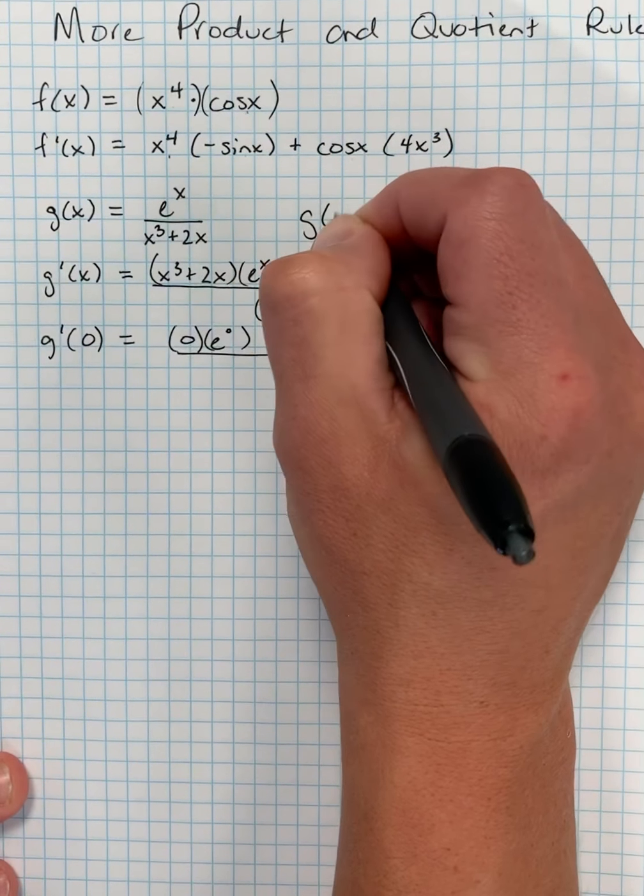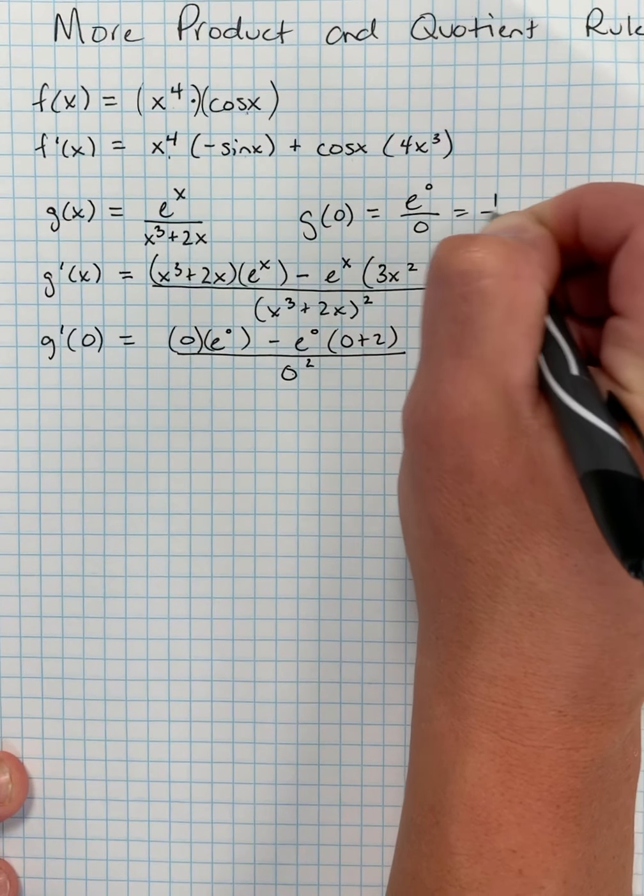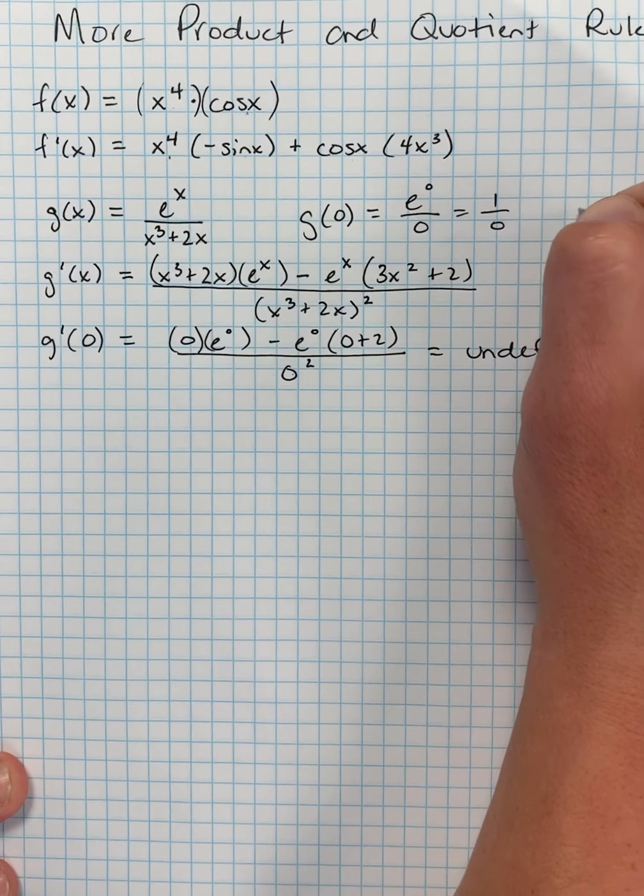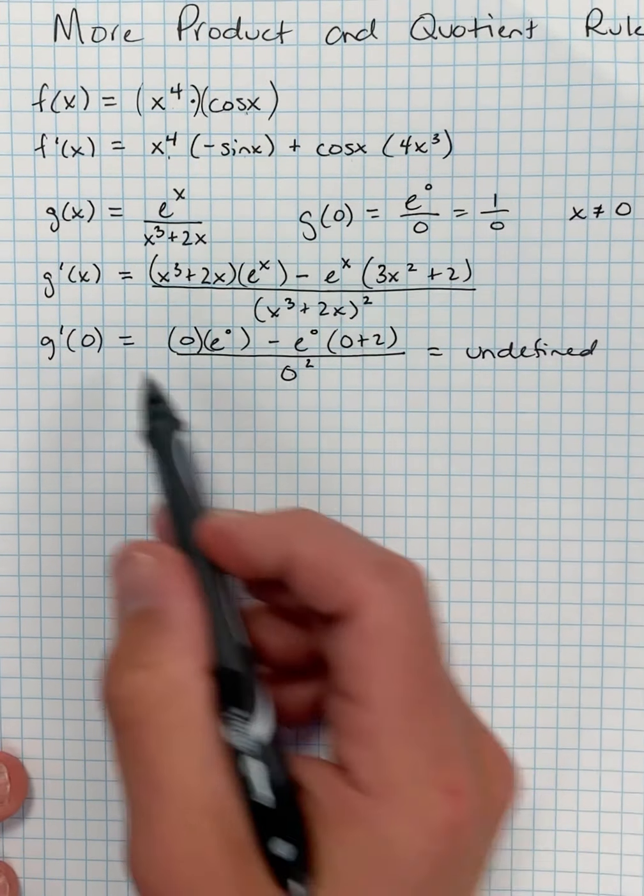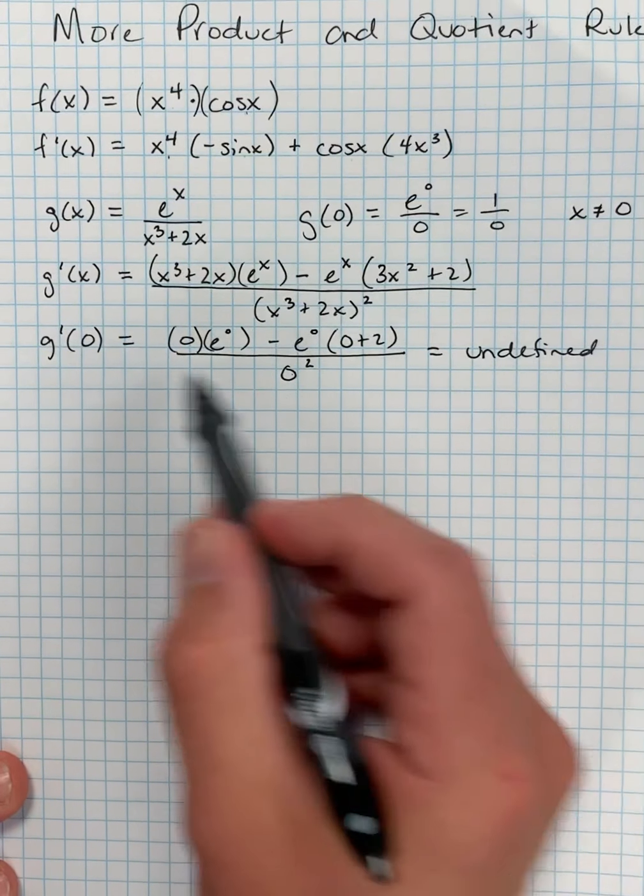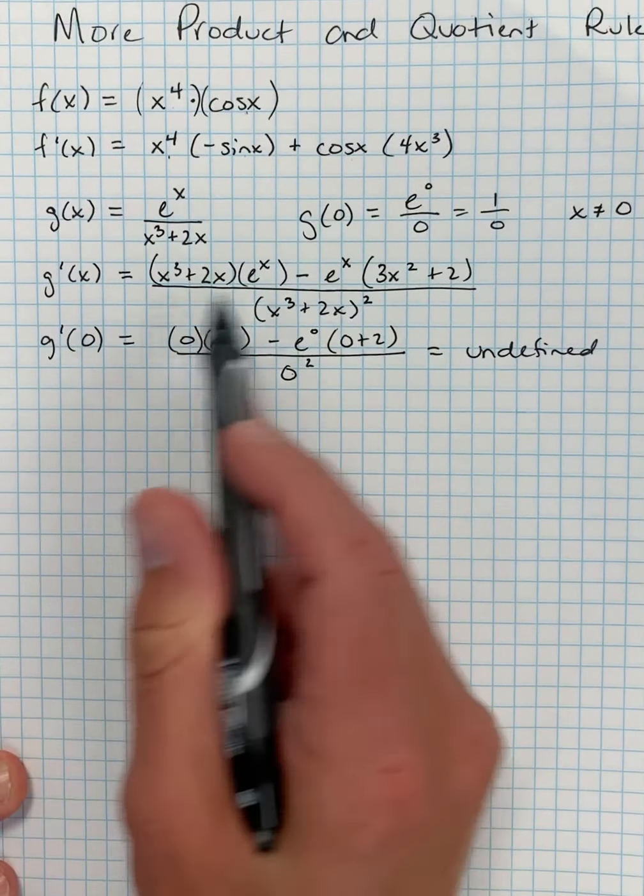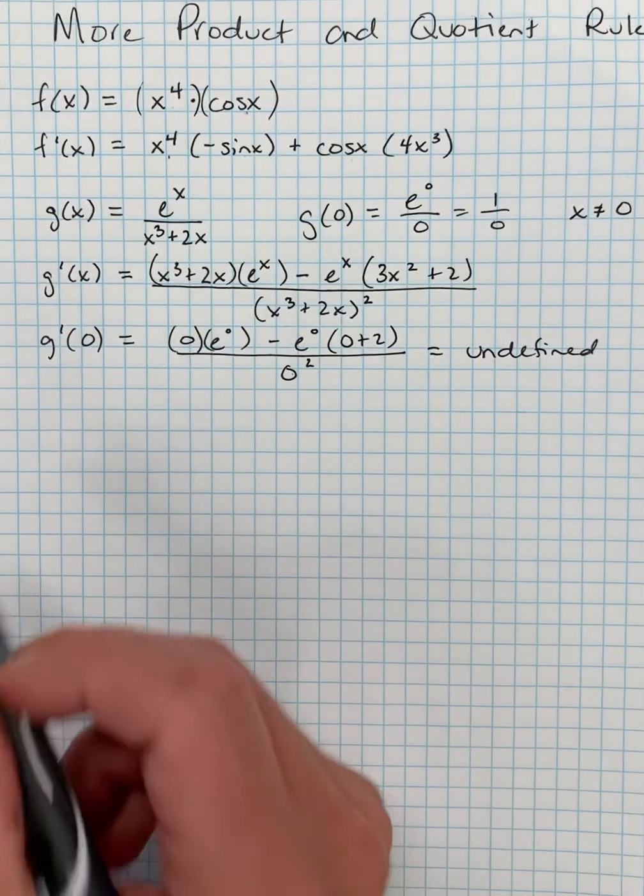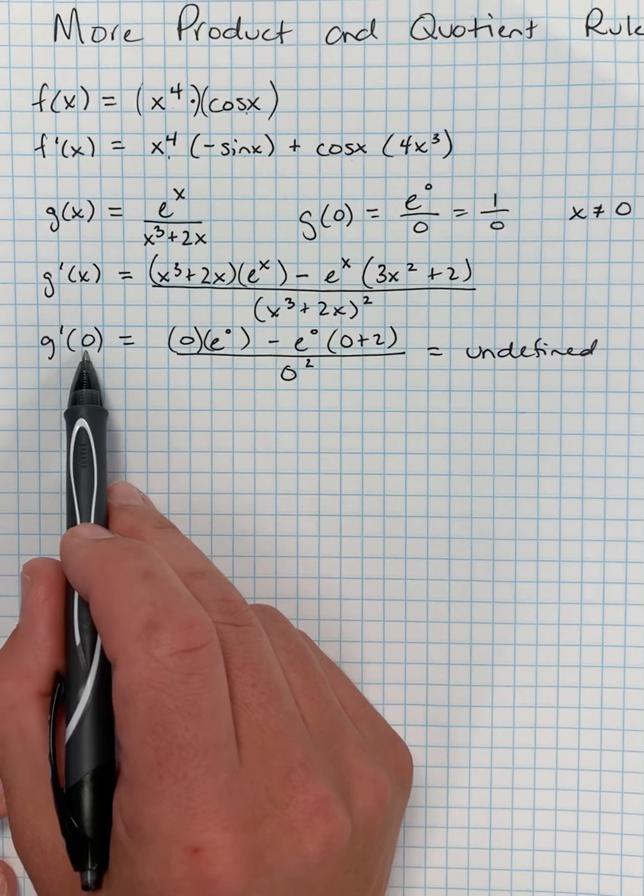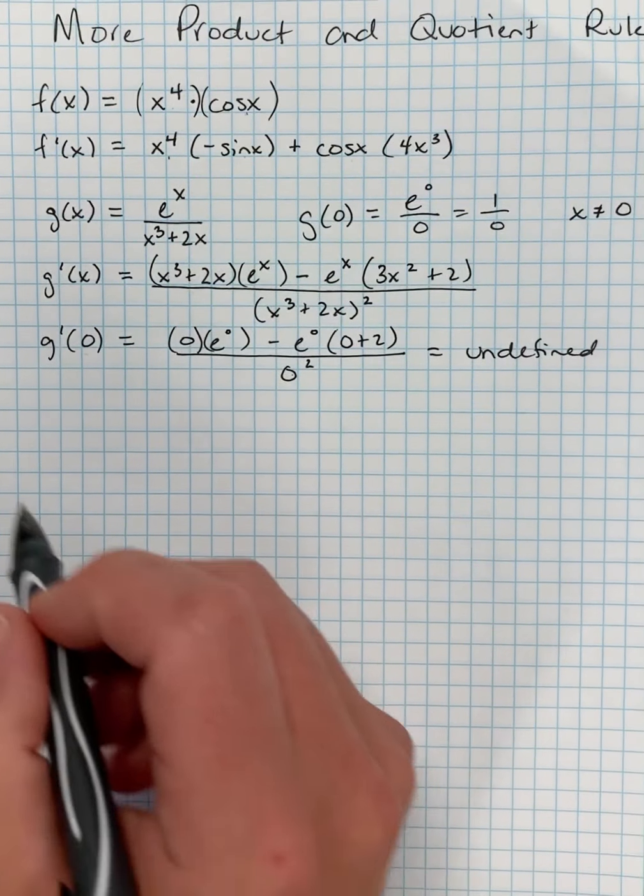So this ends up actually being undefined, as I can't divide by 0. But if you notice, actually, the function g(0), interestingly enough, would be e to the 0 over 0, which is 1 over 0. So 0 isn't even in my domain. x can't be equal to 0, so it doesn't even make sense for me to put 0 in here to my derivative. I could put 1 in, I could put 3 in, I could put 17 in, and I could get a value, an instantaneous rate of change, or a slope of the tangent line at some x value here for this function g. Just want to avoid values that obviously aren't in the domain.